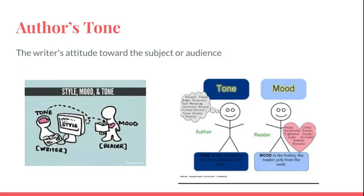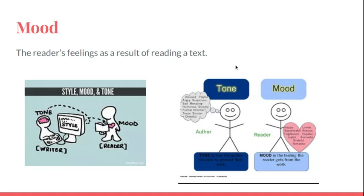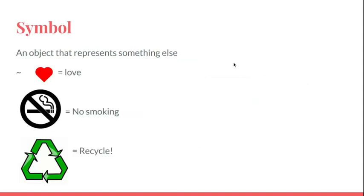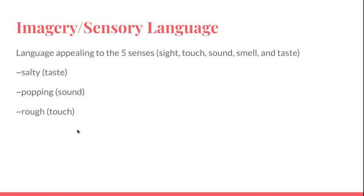Author's tone is the writer's attitude toward a subject or audience. The mood is the reader's feelings as a result of reading a text. A symbol is an object that represents something else, like a heart represents love.